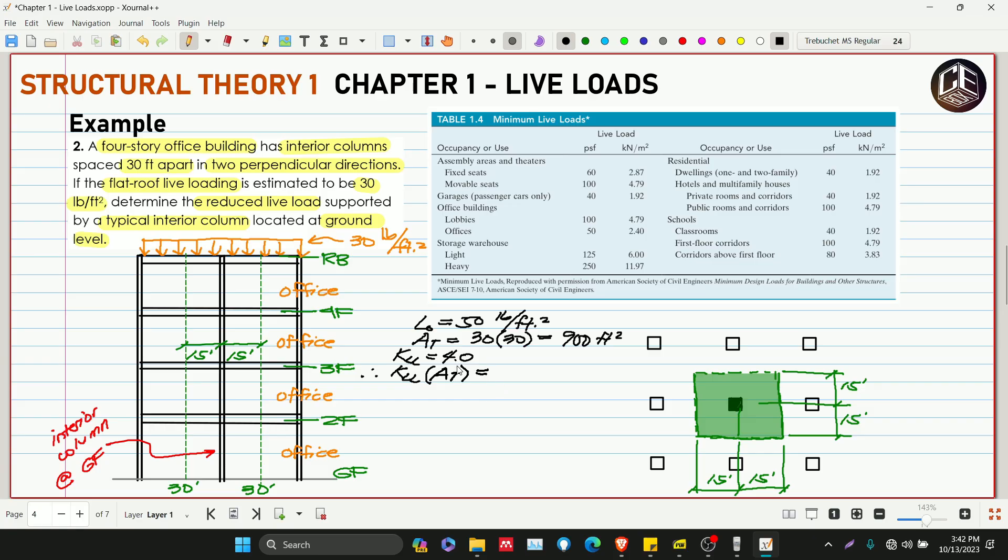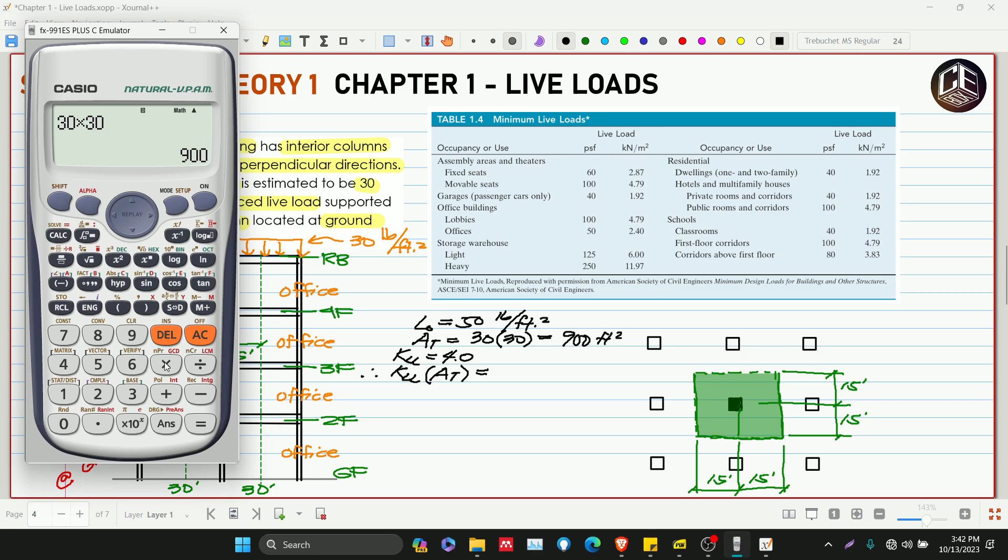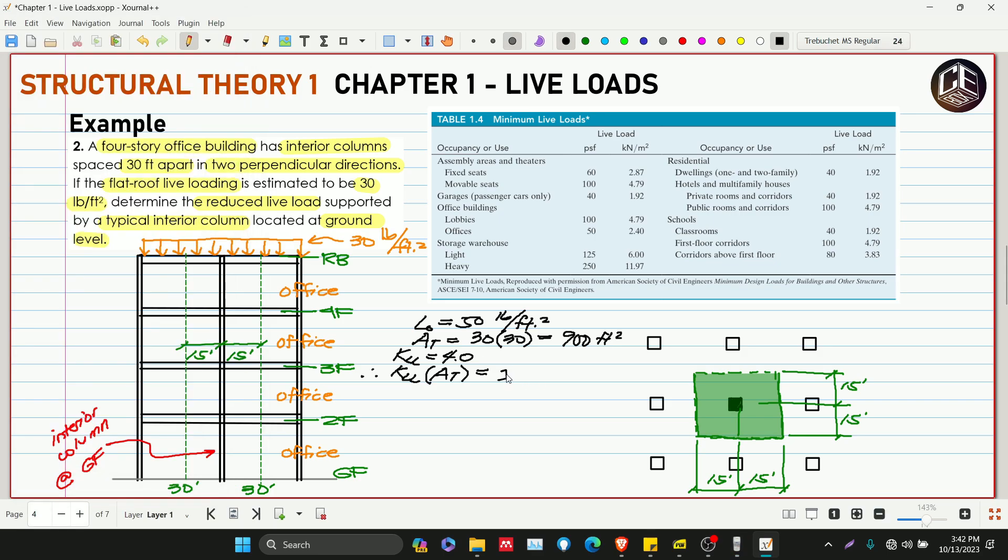Our KLL—since this is interior—is 4.0. Therefore, KLL multiplied by AT, or our influence area: 900 multiplied by 4 is 3,600 square feet. Since our influence area is greater than 400 square feet, therefore we must reduce L0.